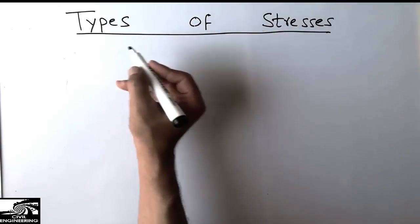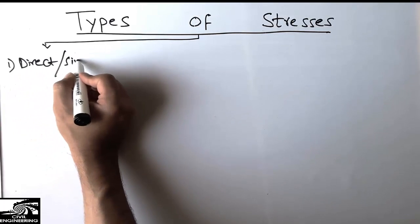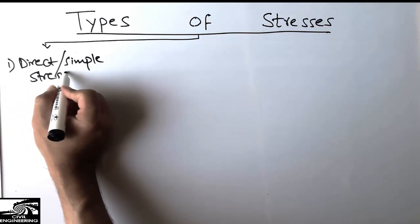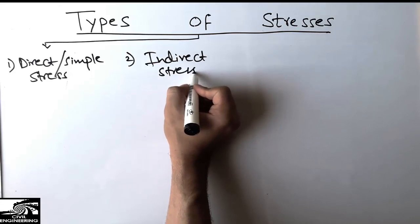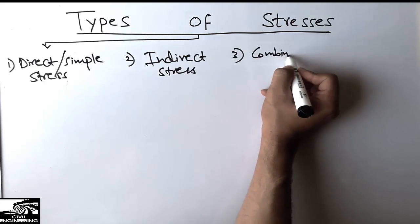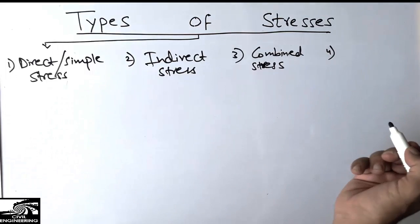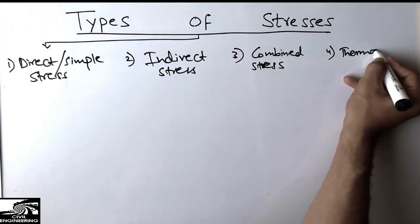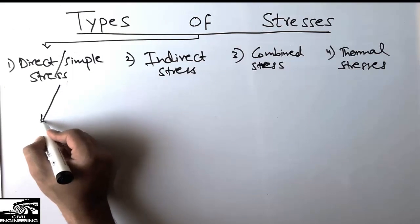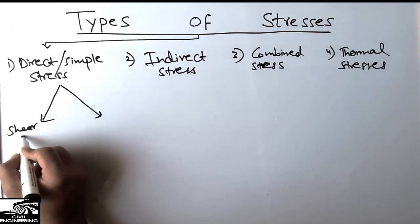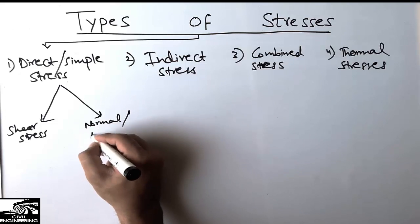There are four main types of stresses. The first one is the direct stress, also called simple stress. The second one is the indirect stress. The third one is the combined stress, which is a combination of two stresses. Direct stress has two subtypes: shear stress and normal stress, also called axial stress.